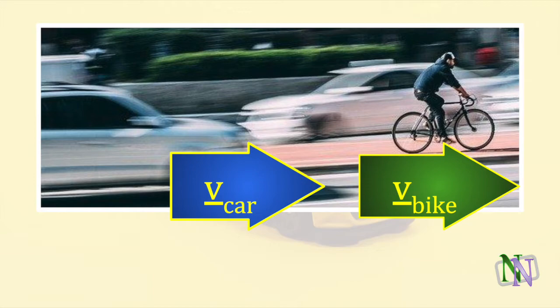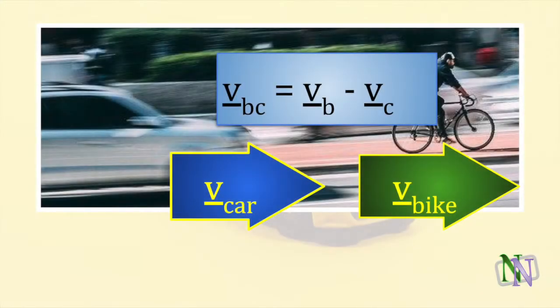The formula for relative velocity is sometimes used in exam questions, even though it's not in the data booklet. You must make sure you subtract in the correct order. The velocity of b, as seen from c, is the velocity of b minus the velocity of c. This works for movement along a straight line where positive and negative numbers are used. When the velocities are at an angle to each other, we use vectors.